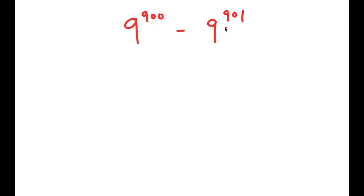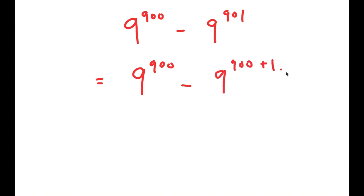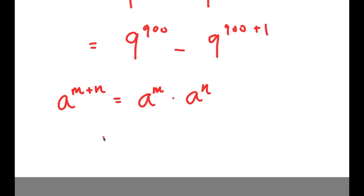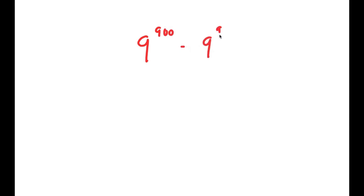9 to the power of 900 is actually a factor of 9 to the power of 901, so all we have to do is rewrite 9^901 as something times 9^900. We can use properties of exponents to do this — I'm going to rewrite 9^901 as 9^(900+1), and using the property a^(m+n) = a^m × a^n, I get 9^900 minus 9^900 times 9^1.